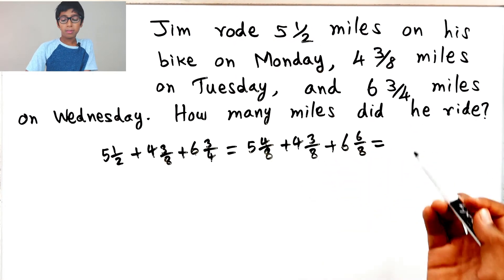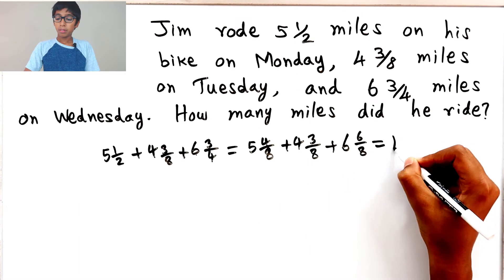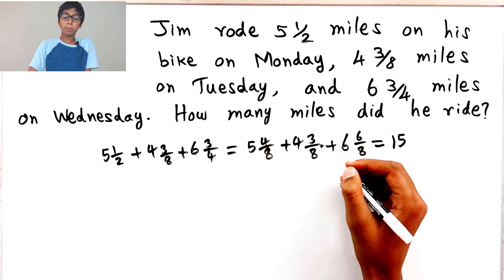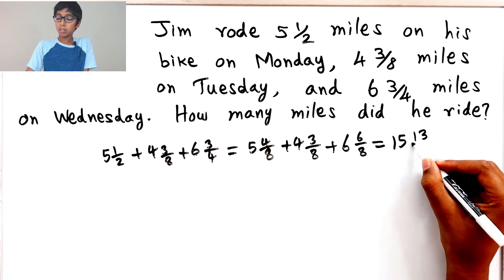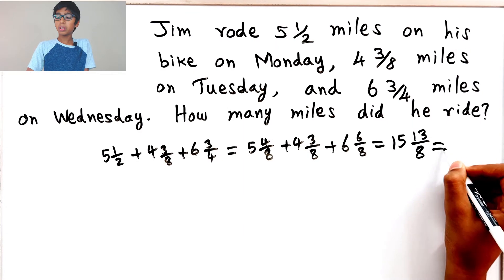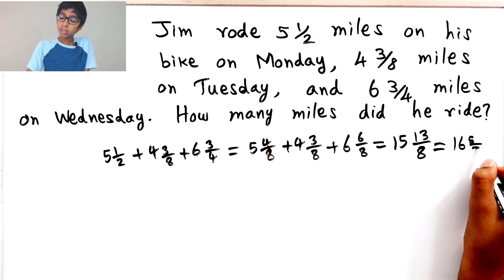so we just have to add. So it's 15, 4 plus 3, 7, 13/8. So we equal this, it would be 16 5/8.